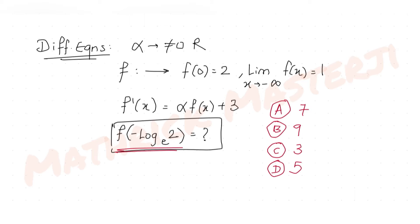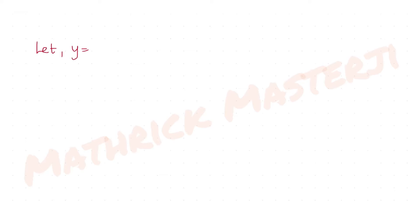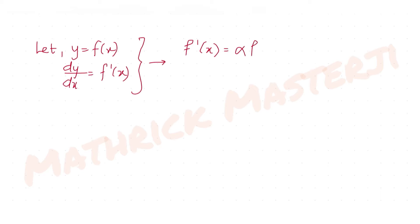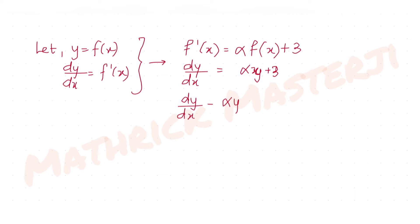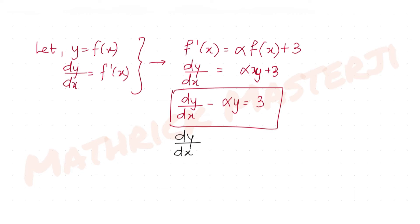We have f'(x) = α·f(x) + 3. Denoting f(x) as y, so dy/dx = f'(x), the differential equation becomes dy/dx = αy + 3, which we rewrite as dy/dx − αy = 3. In standard form dy/dx + Py = Q, we have P = −α and Q = 3.